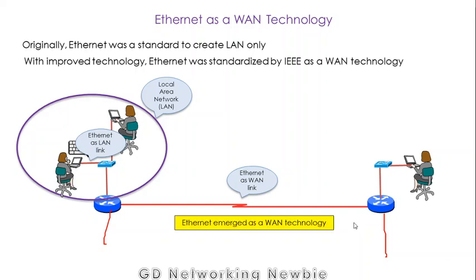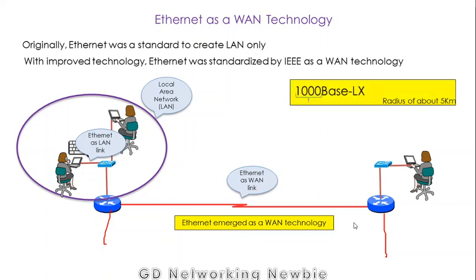So Ethernet emerged as a WAN technology, and IEEE gave us a standard called 1000BASE-LX. With this standard we could create a network having a radius of more than about five kilometers.